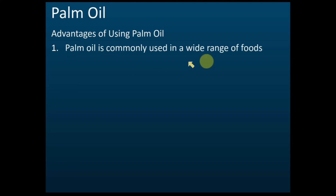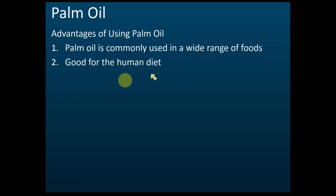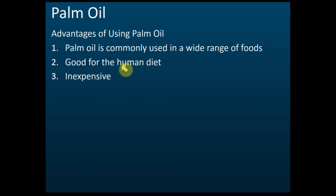Palm oil is commonly used in a wide range of foods. When cooking in Malaysia, most of the oil used is palm oil, so you can use it to cook many different types of food. It's good for the human diet, and it's also inexpensive — meaning it's cheap.